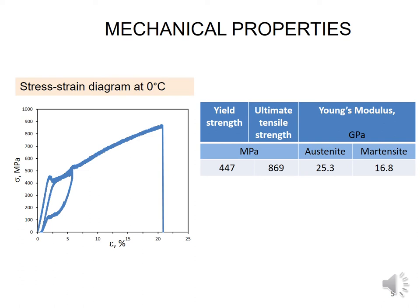Mechanical properties were defined at 0°C, where the material shows pseudoelastic behavior. The following mechanical properties are presented in the table: yield strength is 447 MPa, ultimate tensile strength is 869 MPa, and the two Young's moduli — austenite and martensite — are 25.3 and 16.8 GPa, respectively.